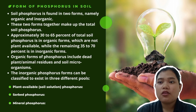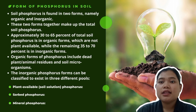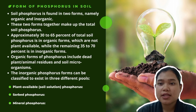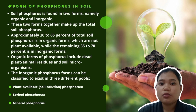Organic forms of phosphorus include dead plant or animal matter, crop residues and soil microorganisms. Soil microorganisms play a key role in processing and transforming this organic form of phosphorus into plant-available form.